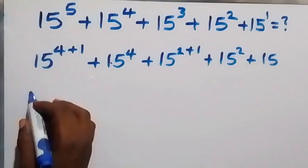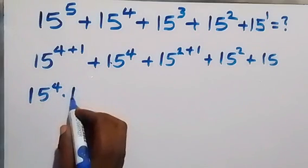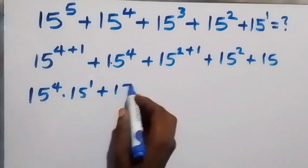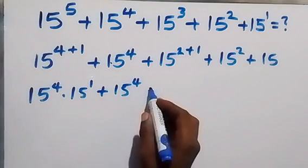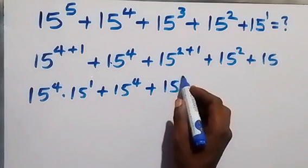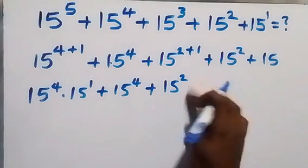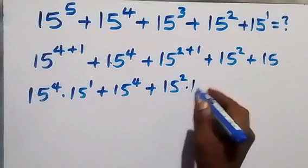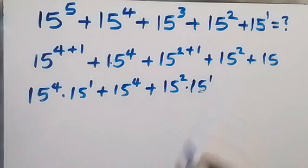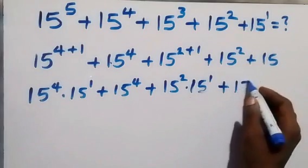From the law of indices, this will be 15 raised to power 4 times 15 raised to power 1, then plus 15 raised to power 4, then from here we can write this as 15 raised to power 2 times 15 raised to power 1 on the law of indices as well, then plus 15 squared, then plus 15.